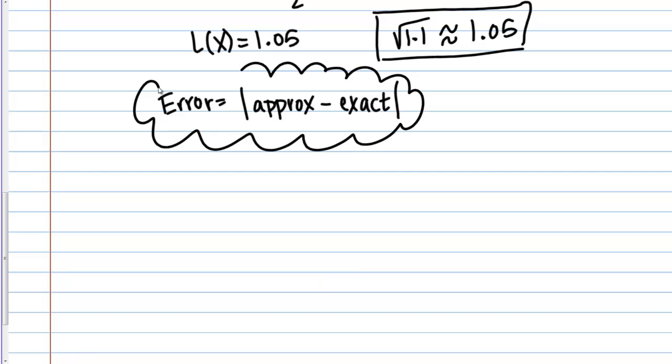Of course, to find the error, we have to know the exact value. In this case, we can just find the exact value of the square root of 1.1 using our calculator. If we do that, we get the following. Our approximation was 1.05. If you calculate the exact value, it is 1.0488 and then some more decimal points, but we'll just leave it at that. If you actually perform that calculation, you get about 0.0012. This is the error or the difference between the approximate value that we calculated and the exact value of the square root of 1.1.